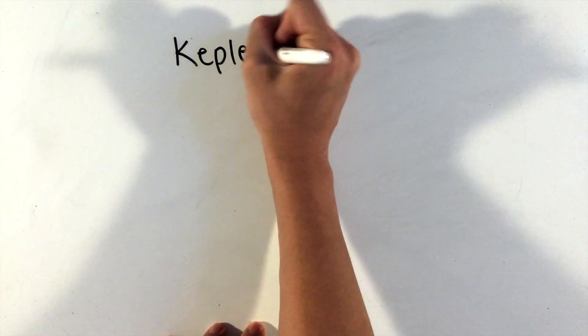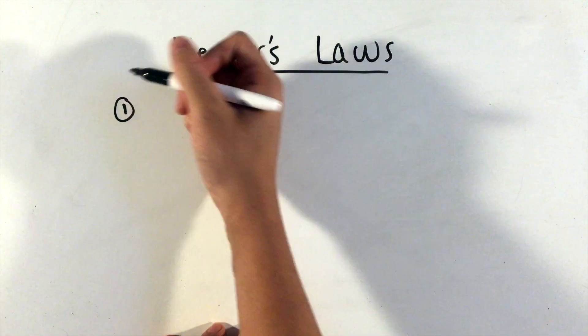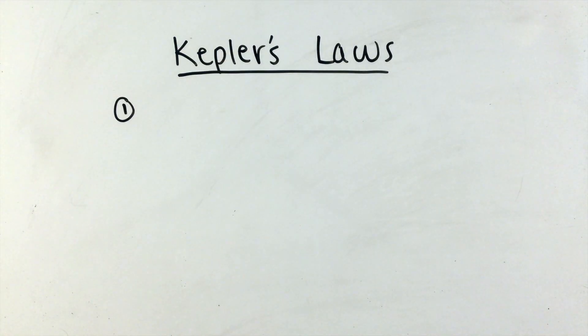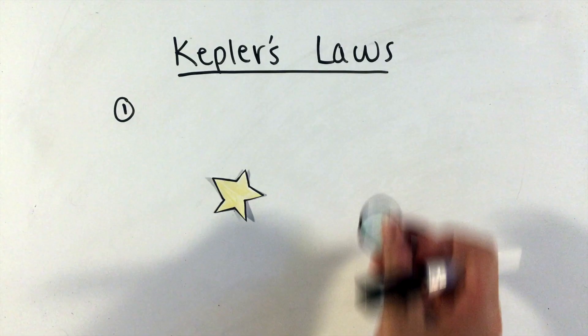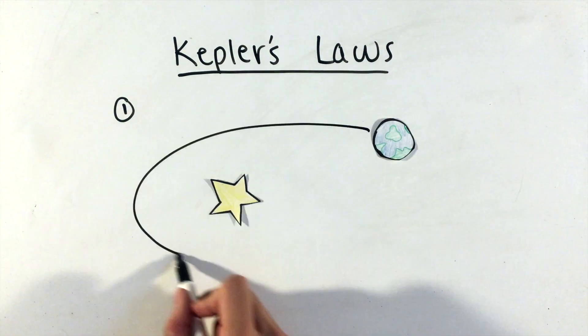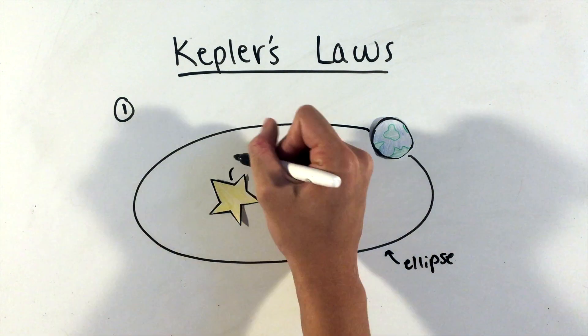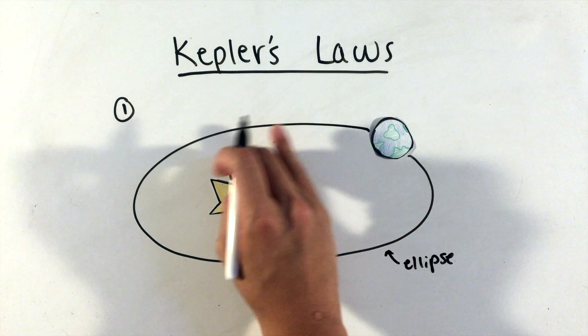Besides Newton, however, another equally important set of laws related to gravitation are known as Kepler's three laws of planetary motion. His first law states that every orbit consists of an object in an elliptical trajectory around the central body which always lies at one of the foci of this ellipse.